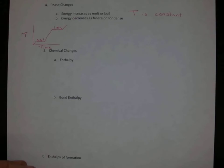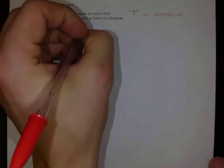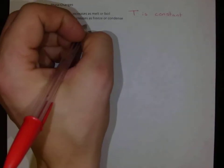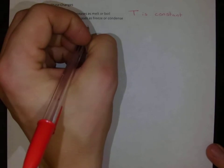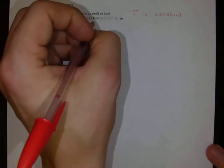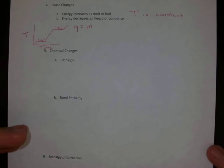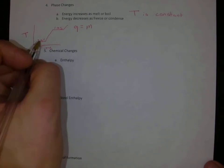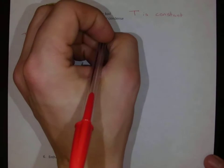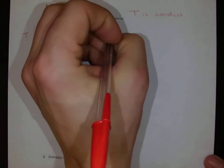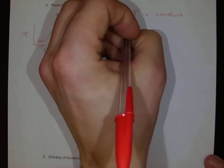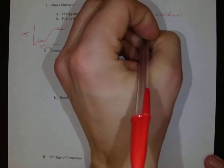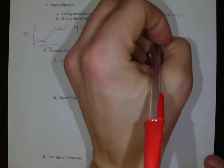So with these sorts of problems, we have Q equals essentially our mass times the molar heat transfer, or the molar heat of fusion, or heat of vaporization. So with water, the heat of vaporization is 40.7 kilojoules per mole.